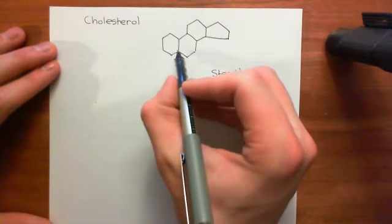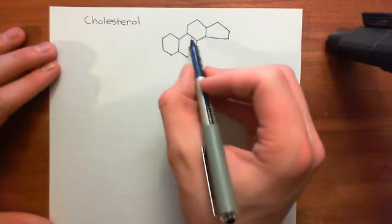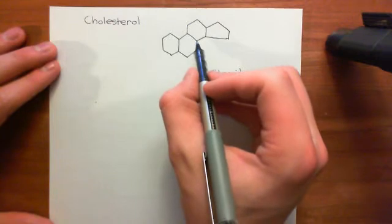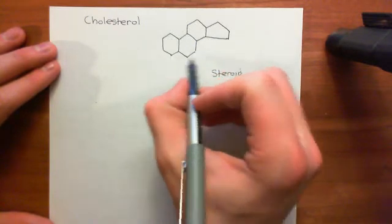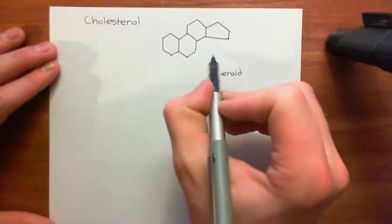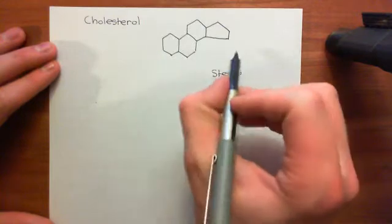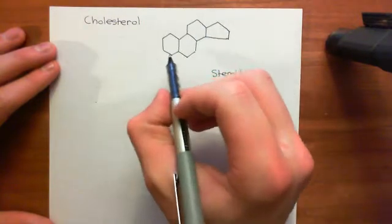They are implicitly shown as these meeting points or these corners, and you also don't show hydrogens coming off carbons. Basically, in the core steroid structure, all you have is carbons and then hydrogens coming off carbons, which means that the structure becomes extremely simple.